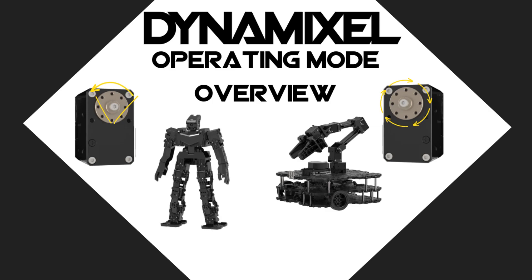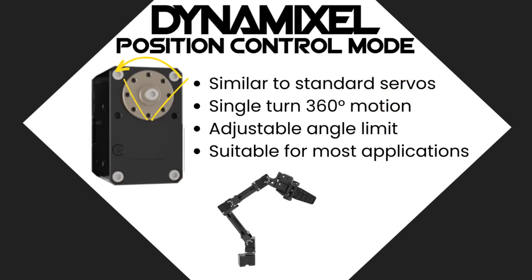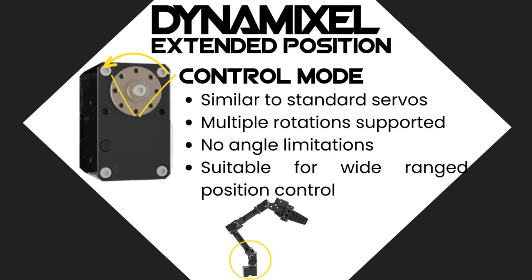Dynamixels support a total of six different operating modes, starting with position mode — the default operating mode of Dynamixel actuators and the one most similar to the operation of other servo motors. This mode allows users to specify desired goal positions for the servo to move within a single rotation. The next supported mode is extended position control mode, which behaves similarly to standard position mode with the additional ability to specify positions requiring multiple rotations.